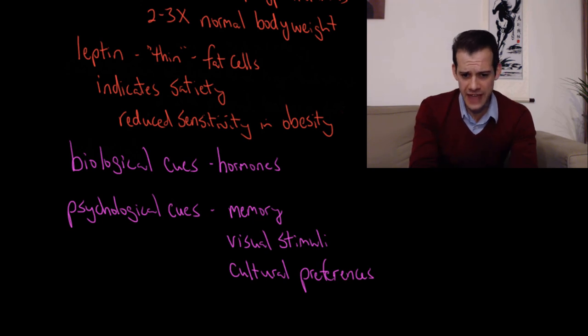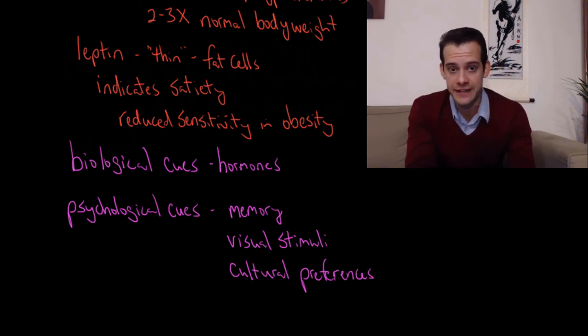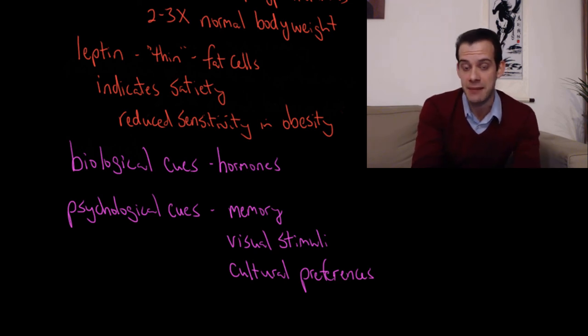And then you also have preferences, and these can be broad preferences in terms of culture, which foods are considered more or less appetizing in different cultures. And then even on an individual basis, looking at the same image might make me very hungry and motivated to eat. Whereas you don't like that food and so you don't find it particularly appetizing.